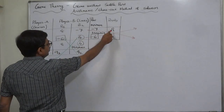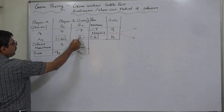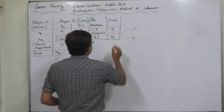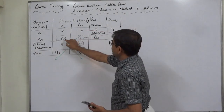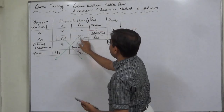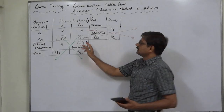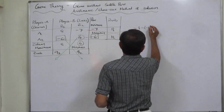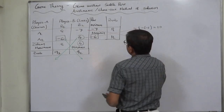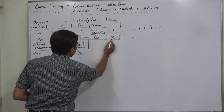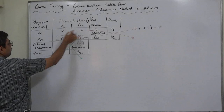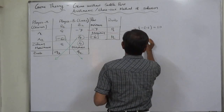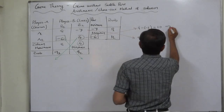To calculate the probability P1, we need to take the difference of the payoffs against strategy A2. Difference means higher minus lower: 4 minus minus 6 equals 10. Similarly, to calculate the probability P2, we first need to find out the difference between the payoffs of strategy A1: this is 8 minus minus 7, so it is 15.